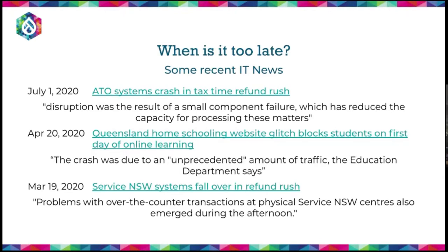When is it too late? On the first of July you go to IT News and see ATO's system crash — it happens every year because ATO never seems to know when the end of financial year starts. Also, Queensland homeschooling started and apparently had around 300 concurrent users — well, 300,000 users given Queensland schools have about 500,000.